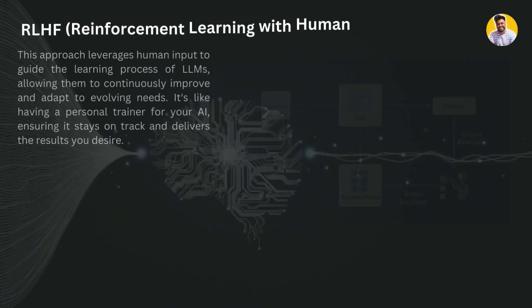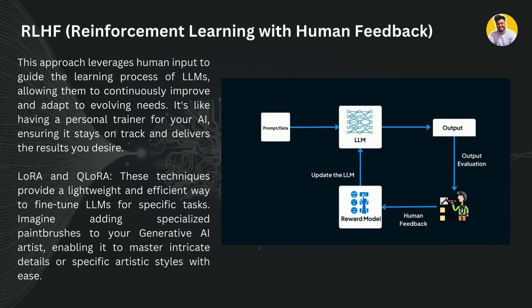The first groundbreaking advancement is Reinforcement Learning with Human Feedback (RLHF). This approach leverages human input to guide the learning process of large language models, allowing them to continuously improve and adapt to evolving needs — like having a personal trainer for your AI. Subcategories of this include LoRA and QLoRA, which provide lightweight and efficient ways to fine-tune large language models for specific tasks — like adding specialized paintbrushes to your generative AI artist, enabling it to master specific styles with ease.